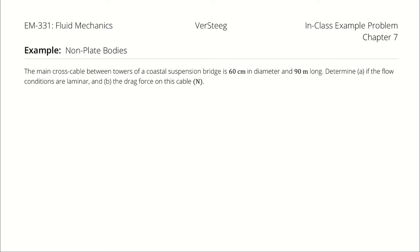The main cross cable between towers of a coastal suspension bridge is 60 centimeters in diameter and 90 meters long. Determine A if the flow conditions are laminar and B the drag force on this cable.